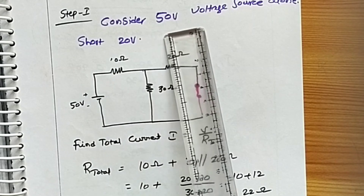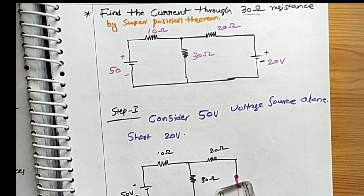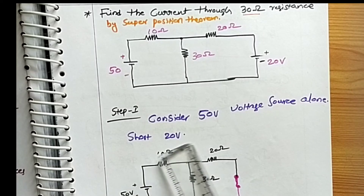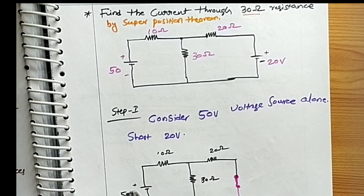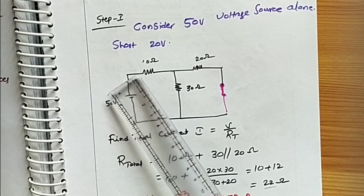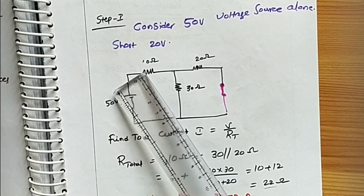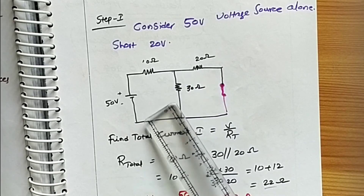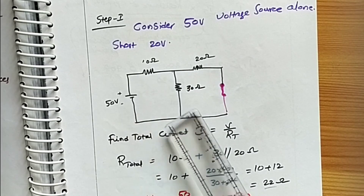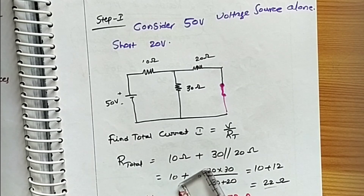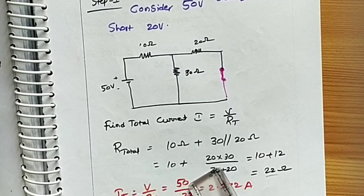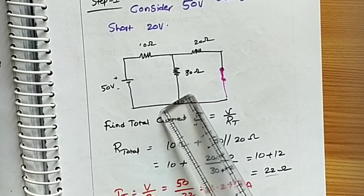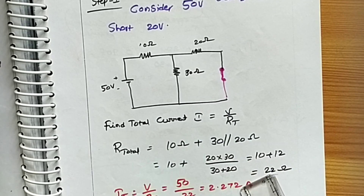Step one: consider the 50-volt source alone; short-circuit the 20-volt source. Find the total resistance to calculate the current from the 50-volt source. The total current I entering the 10-ohm resistance: I = V / R_total. The 30-ohm and 20-ohm resistors are in parallel, and 10 ohms is in series. So R_total = 10 + (20 × 30)/(20 + 30) = 10 + 12 = 22 ohms.